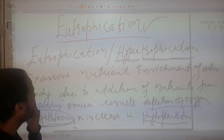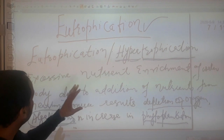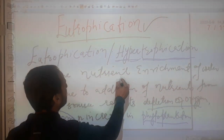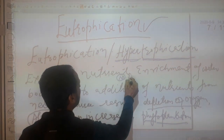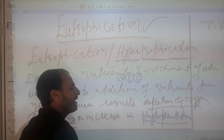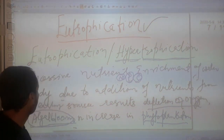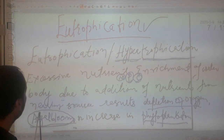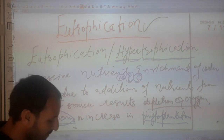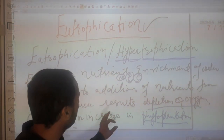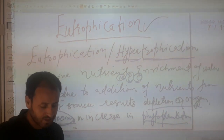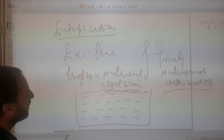So, eutrophication or hypertrophication is the excessive nutrient enrichment of a water body due to addition of nutrients — nitrogen, phosphate, carbon, and many others — from different sources, resulting in depletion of oxygen and algal bloom or phytoplankton increase. Now, how does dissolved oxygen decrease?